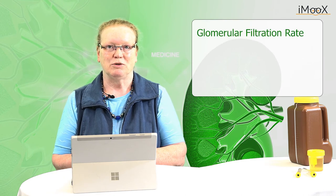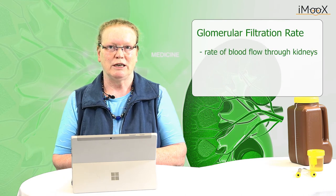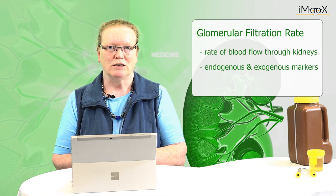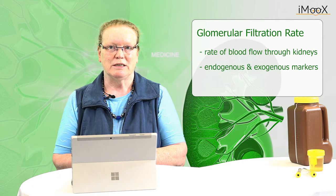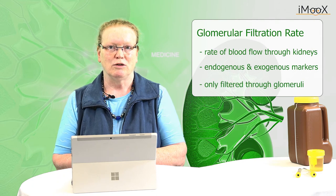Glomerular filtration rate is defined as the rate of blood flow through the kidneys. It can be measured by endogenous and exogenous markers. For an exact definition of renal function, these substances are only filtered through the glomeruli and not secreted or reabsorbed in the tubular system.